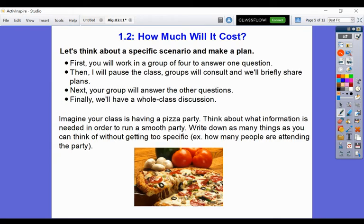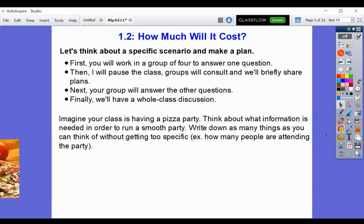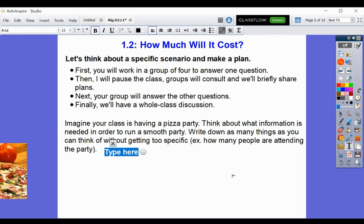Once we get into section 1.2, how much will it cost? We're talking about a pizza party. It says, imagine your class is having a pizza party. Think about what information is needed in order to run a smooth party. Write down as many things as you can think of without getting too specific. We're going to ask ourselves some questions like how many people are attending that party, but we're not going to answer those questions quite yet.